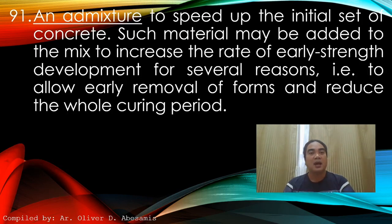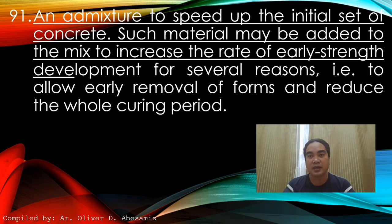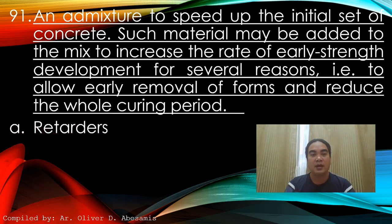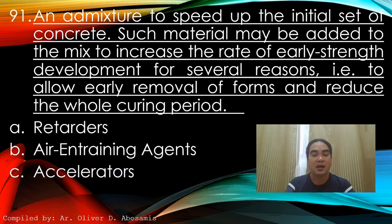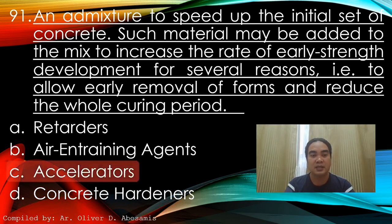Question 91: An admixture to speed up the initial set of concrete. Such material may be added to the mix to increase the rate of early strength development — to allow early removal of forms and reduce the curing period. A) Retarders, B) Air-entraining agent, C) Accelerator, D) Concrete hardeners. Answer: C) Accelerator.